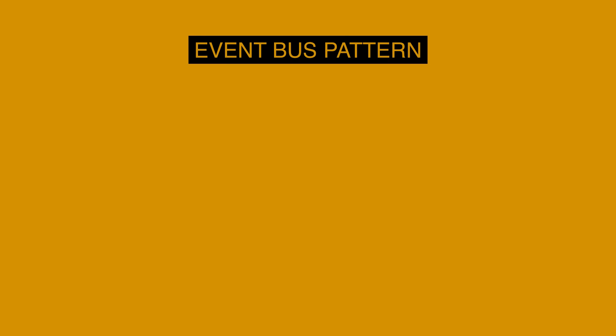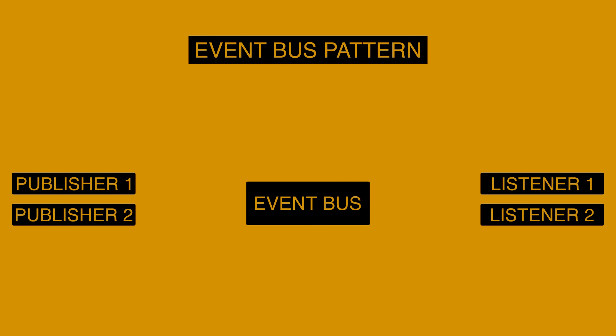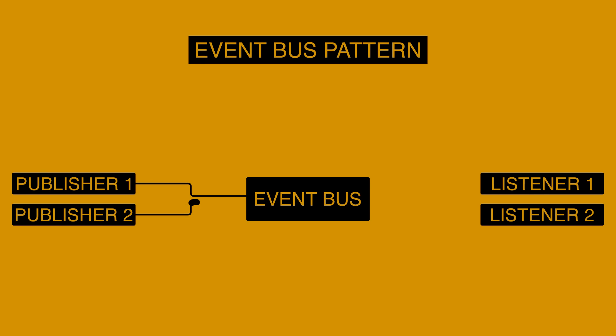Pattern 5: Event-Bus Pattern. The modern enterprise software is often built as a distributed system that can service asynchronously arriving messages associated with a high volume of events. The Event-Bus pattern has four major components: Event-Source, Event-Listener, Channel, and Event-Bus. Sources publish messages to particular channels on an Event-Bus. Listeners subscribe to particular channels and are notified of messages published to a channel to which they have subscribed.